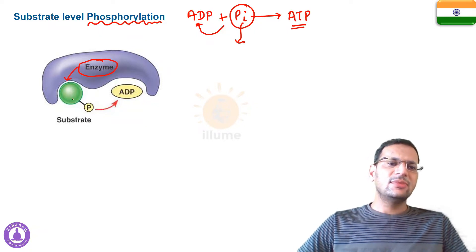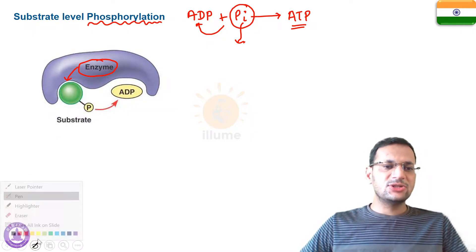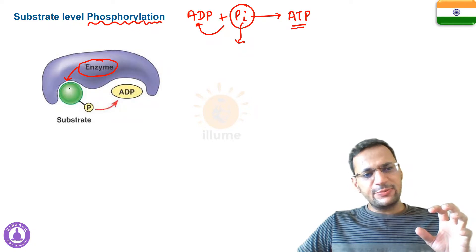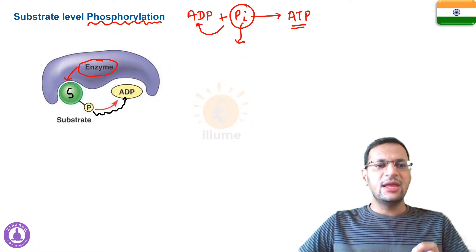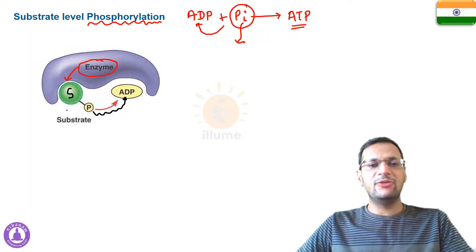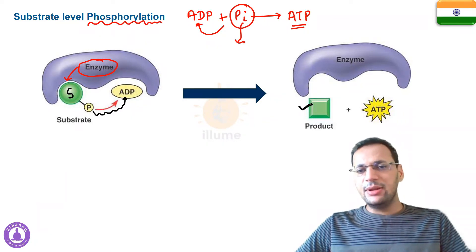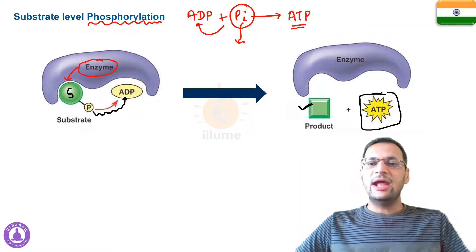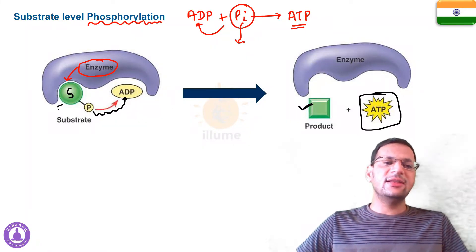Here is an example with a diagram. This is an enzyme. At one site of the enzyme there is a substrate attached, and in its molecular structure this substrate has a phosphate group. This substrate releases its phosphate, which then attaches to ADP and converts it into ATP. After the reaction, the substrate is converted into a product and ATP is formed.